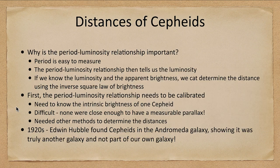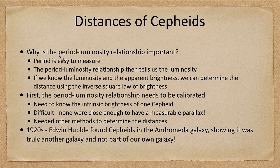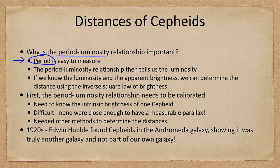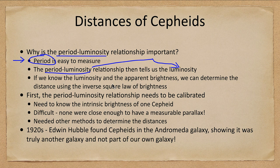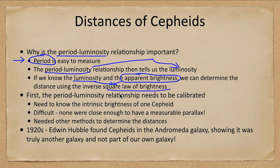So why is the period-luminosity relationship of the Cepheid so important? First of all, the period is very easy to measure. All we have to do is have a star that's bright enough to be visible. As long as we can see the star and measure its brightness and how it changes over time, we can measure the period. We can then use the period-luminosity relationship to tell us the luminosity — that is how bright the star actually is. Luminosity is the true brightness, how much energy that star is putting out every single second. Now we know the luminosity and we can measure the apparent brightness — that's just how bright it appears in the sky. We can then put these two together using the inverse square law of brightness to determine the distance of the star.